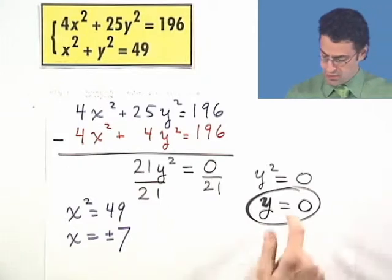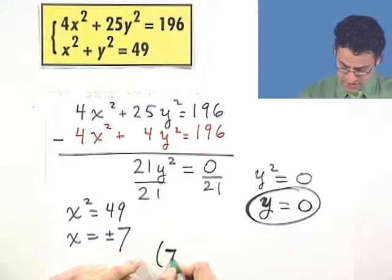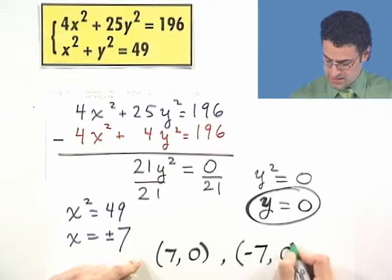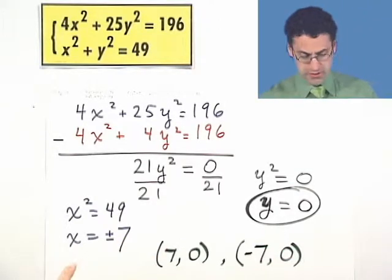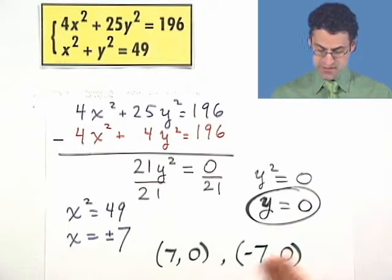And what are they? Well, one is x equals 7, y equals 0, and the other one is x equals negative 7, y equals 0. Is that really, really true? Well, we can actually check our answer by taking a look at a graph and seeing if we get these two solutions.